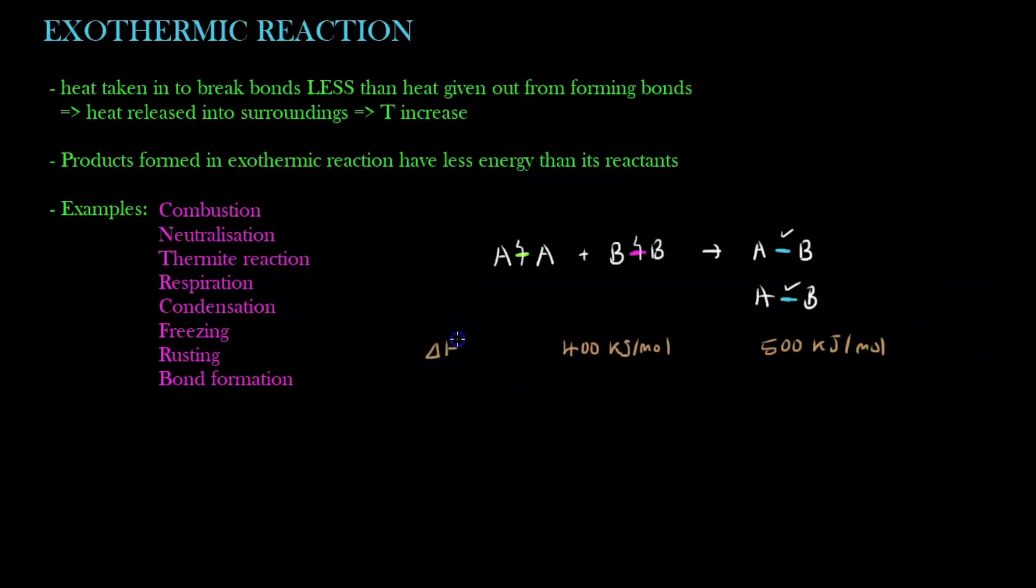And if you recall, change in H is taking the first part minus away the second part, which will result in a negative of 100 kJ per mole. Hopefully this makes sense. So let's re-examine the definition again. Heat taken in to break bonds, this one, 400, is less than the heat given out from forming bonds, 500. When I take away, it's negative 100 kJ per mole.